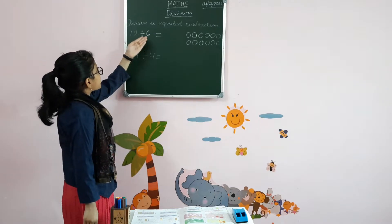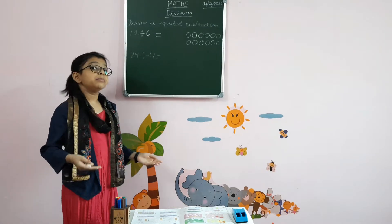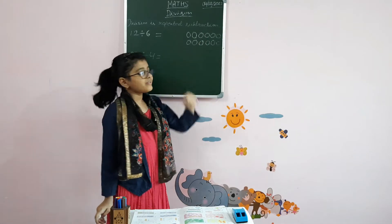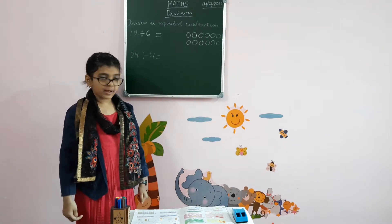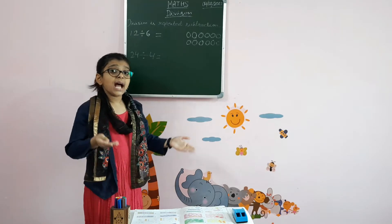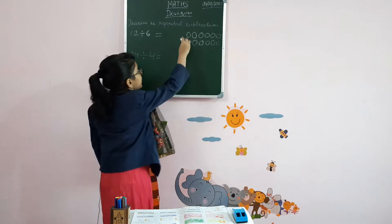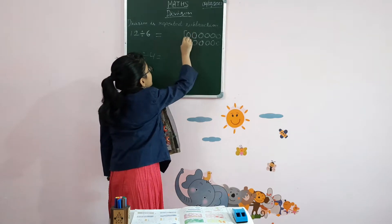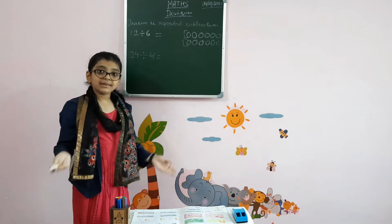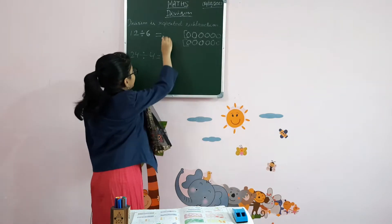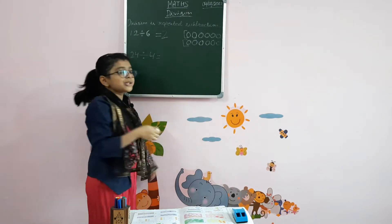12 divided by 6. It means that if we have 12 circles and we have to group them in 6, how many groups will be there? So, we can observe that we can make two groups here. One here and another one here. That means our answer will be 2.